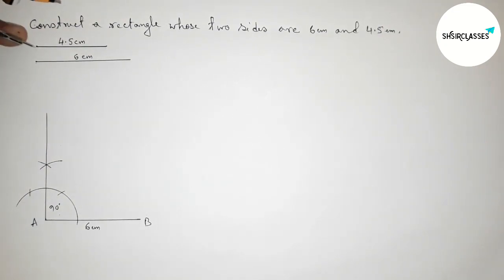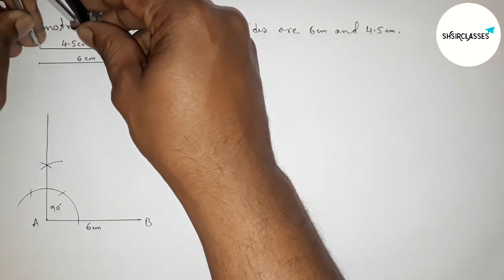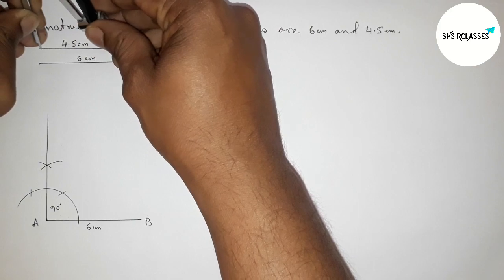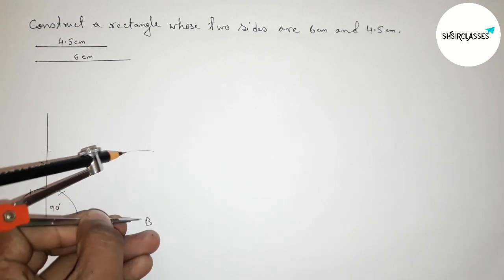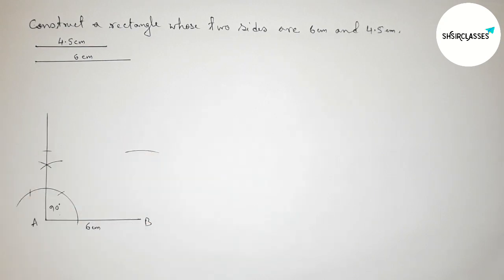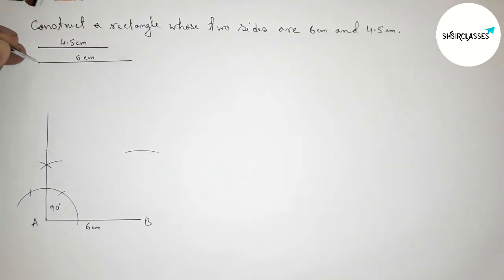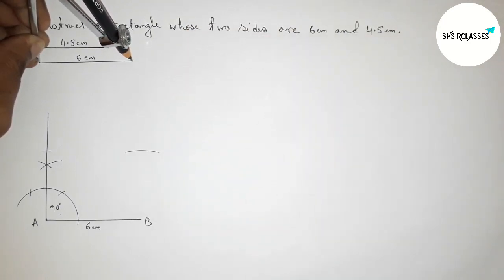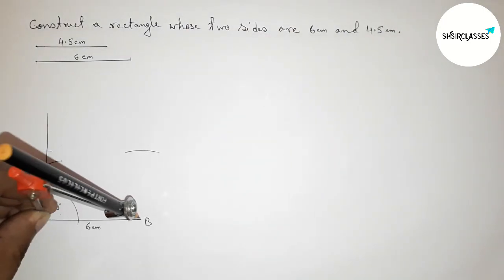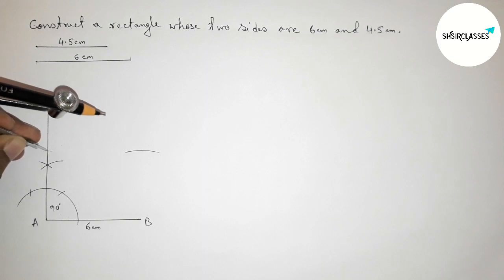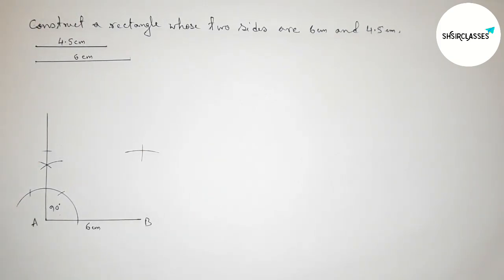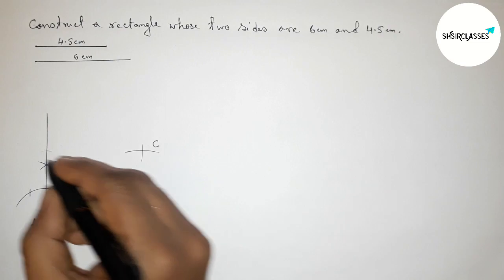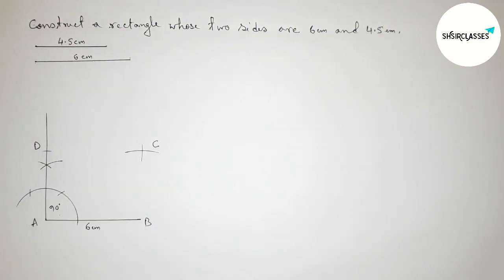Next, taking 4.5 centimeter length using compass and putting the compass on point A and cutting here. Then putting the compass on point B and drawing an arc here. Now taking the 6 centimeter length, equal to AB, putting the compass here and cutting here. Now taking here point C and here point D.